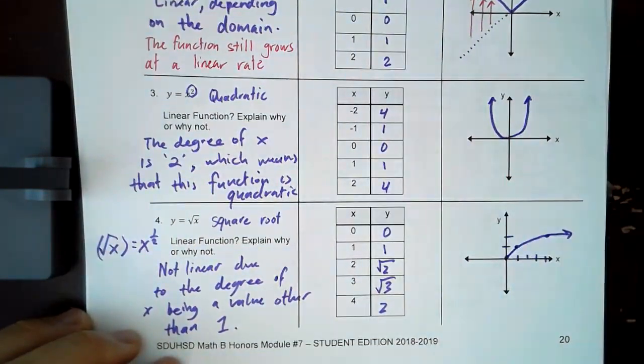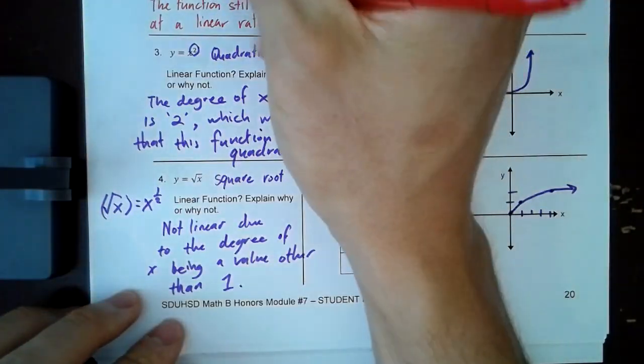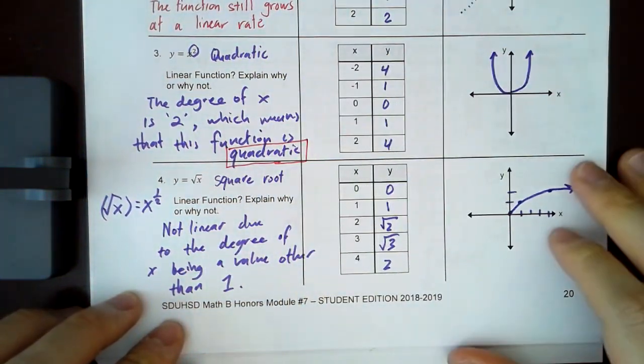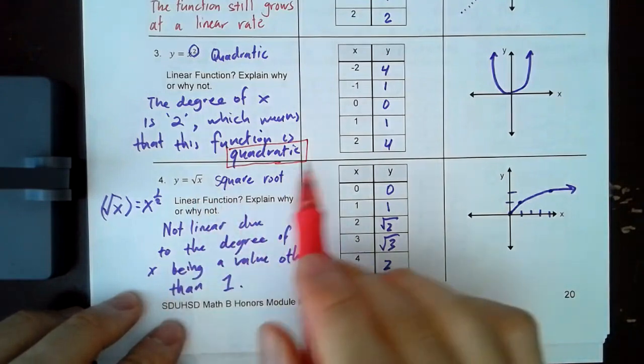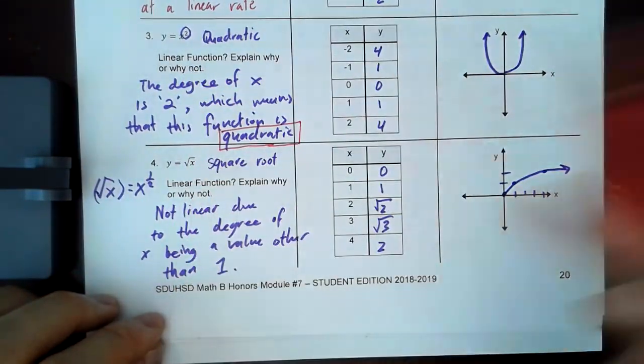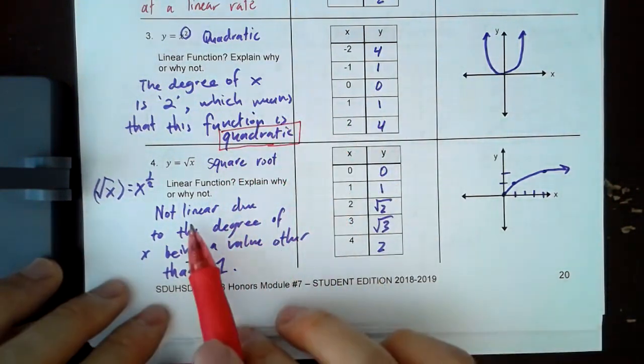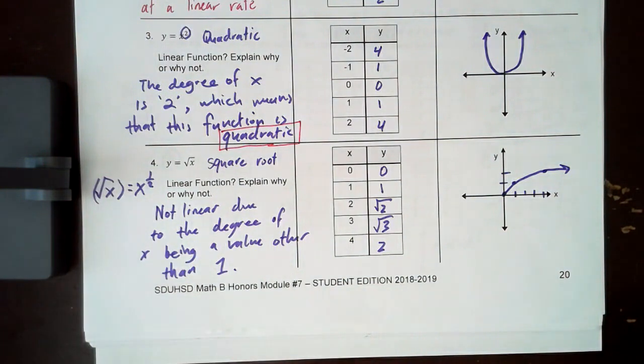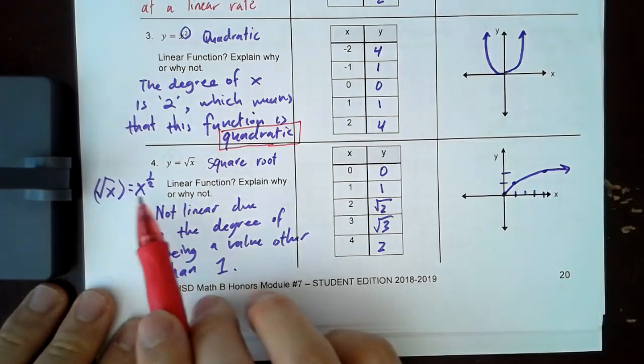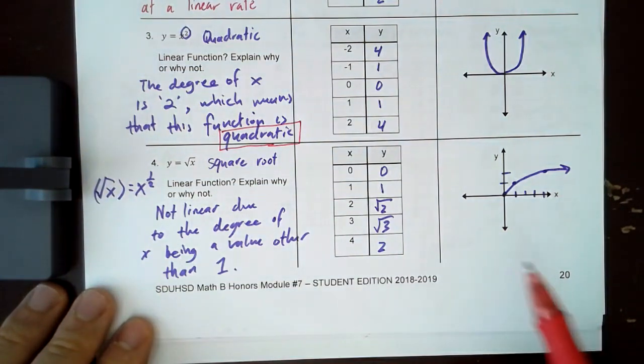So if x squared is not linear, so this is quadratic and not linear, well, then that means the square root of x is also not linear, right? Because these two are inverse operations. If the square is not linear, then you kind of already know that the square root is also not linear. And on the left, I wrote how the square root of x is really x to the one-half power.